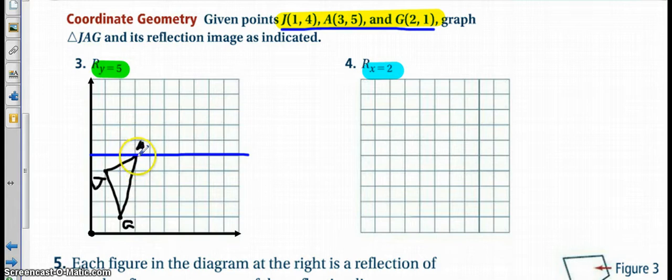So then when we reflect every point, notice that point a is on the line, so it will not be reflected, it just stays right there. J gets reflected, and so does g. So again, my drawing is really poor because my smart tab is not working. But here is essentially what you would get, your triangle j prime, a prime, g prime, and your a prime would still be on that line right there.